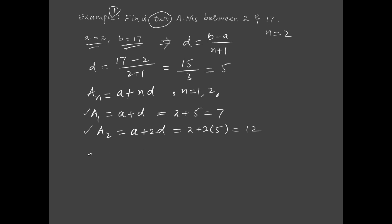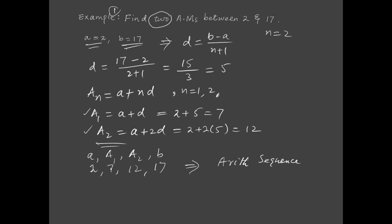Verification: inserting A1 and A2 between a and b gives the sequence 2, 7, 12, 17. The common difference is 7 - 2 = 5, 12 - 7 = 5, and 17 - 12 = 5, confirming this is an arithmetic sequence with d = 5.